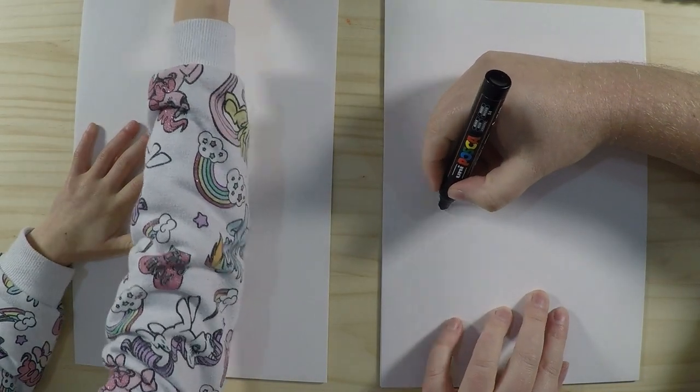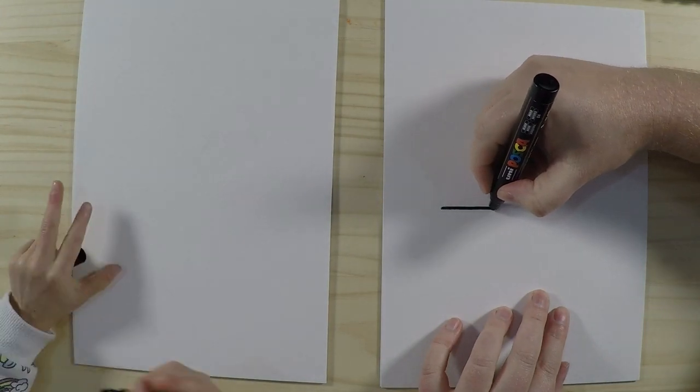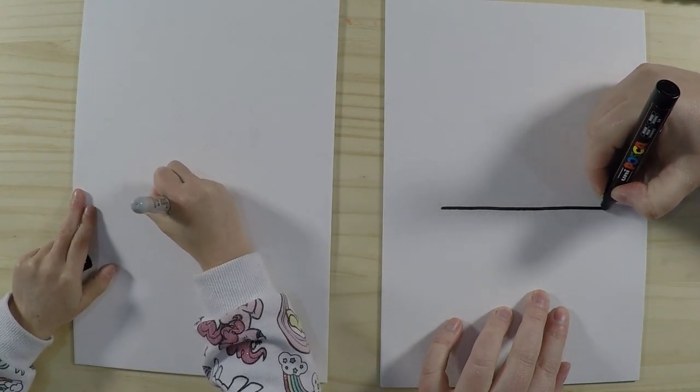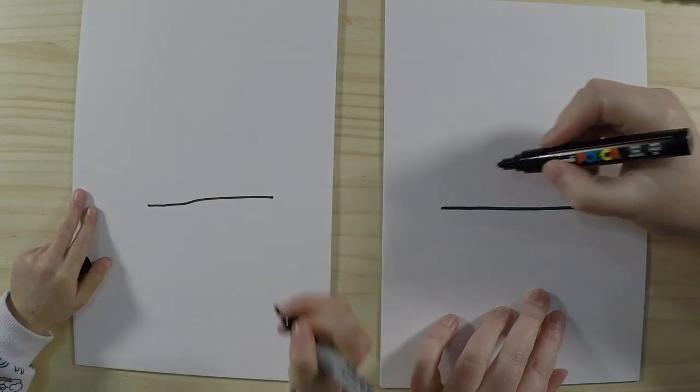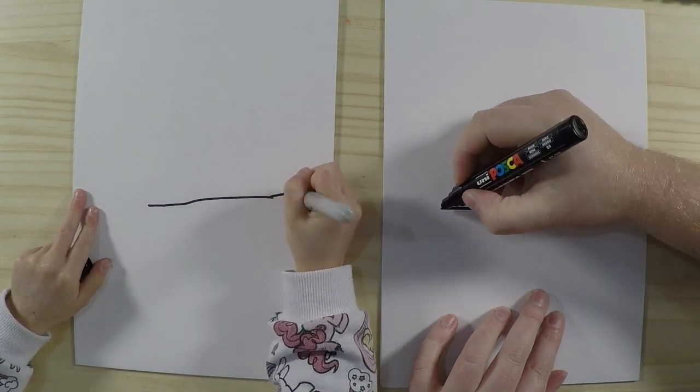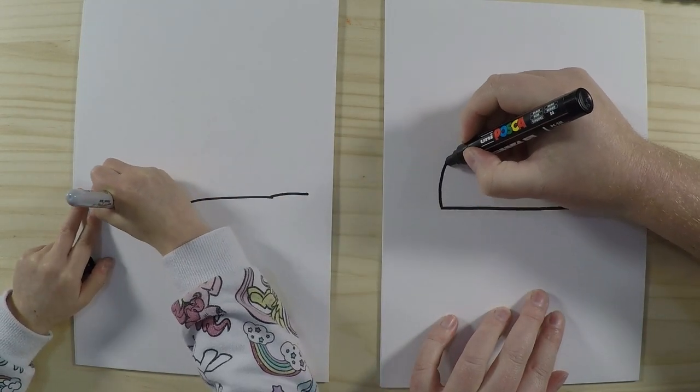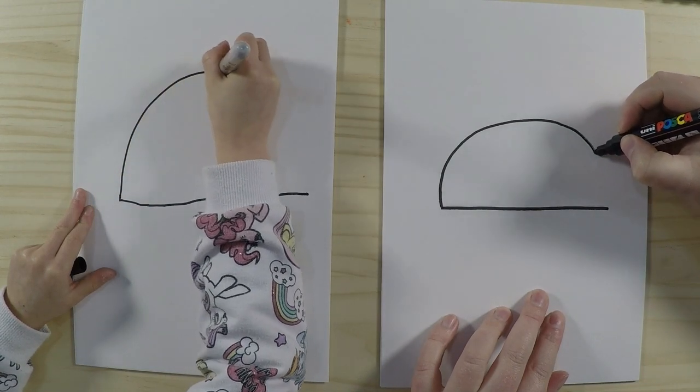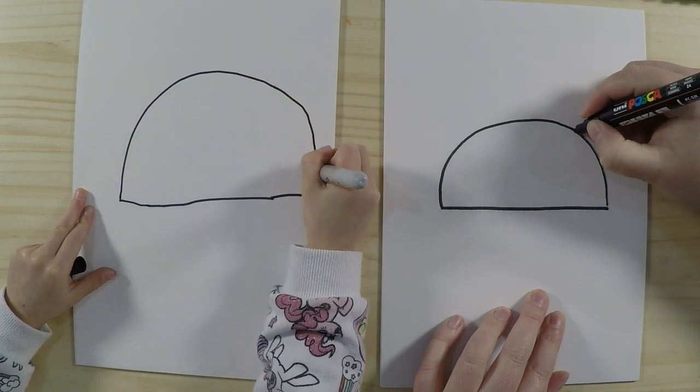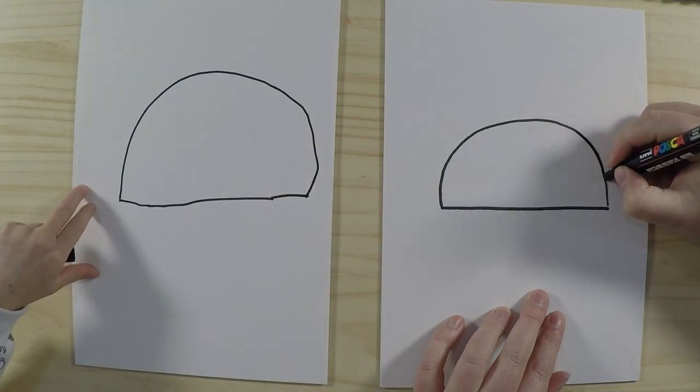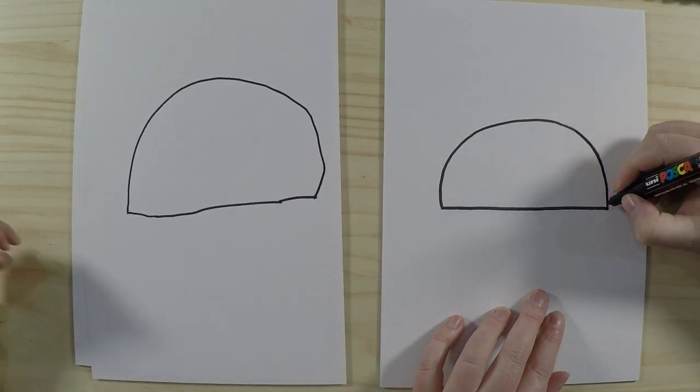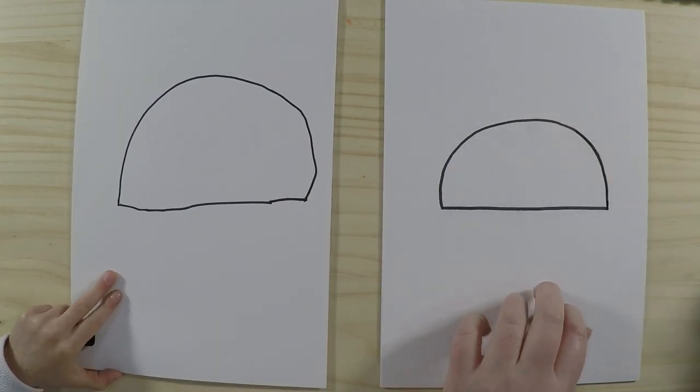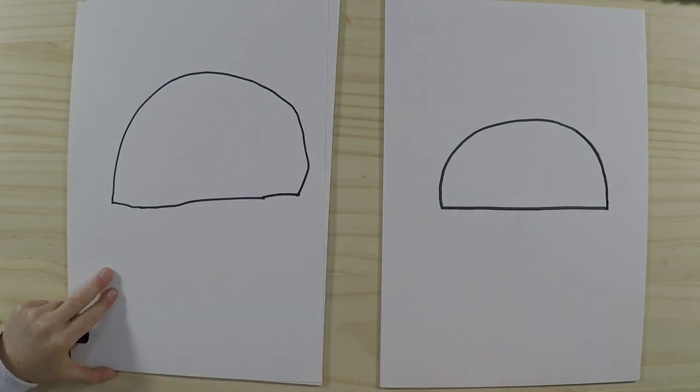So first of all, let's start off with drawing a nice straight line along the bottom. And then we're going to draw a big semi-circle or half a circle along the top. I'm doing a big one! Yeah, you can do it any size that you like. That's a big one! That is going to be a big Ladybird, yes. Okay, so that's the body.